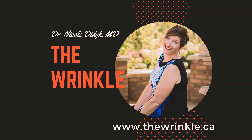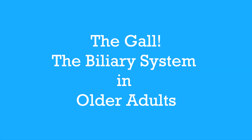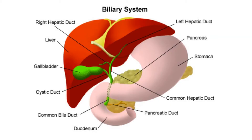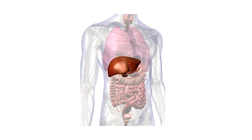The biliary system — what is it and how is it different in older adults? When I say biliary system I'm referring to the gallbladder, parts of the intestine, the liver, as well as the pancreas — all those structures that are in that right upper quadrant and central upper abdomen area. It's important to know what can be different about biliary disorders and examining the biliary system in older adults because there are some differences.